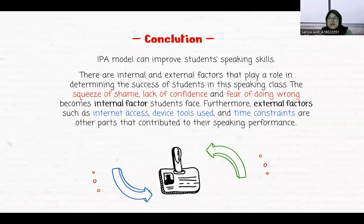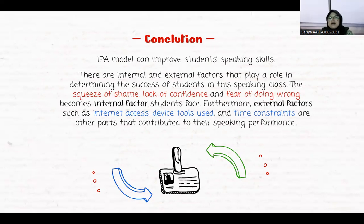So, what is the conclusion? From this research, we can conclude that the IPA model can improve students' speaking skills. There are internal and external factors that play a role in determining the success of students in the speaking class. The sense of shame, lack of confidence, and fear of doing wrong become internal factors students face. Furthermore, external factors such as internet access, device tools used, and time constraints are other parts that contribute to their speaking performance.